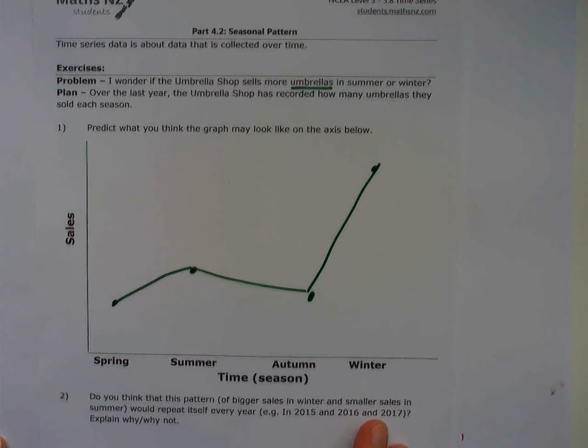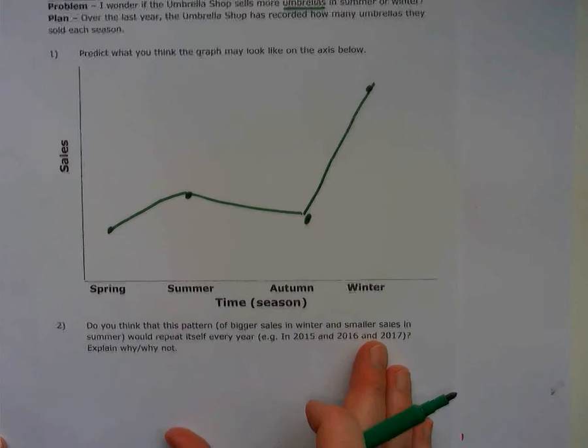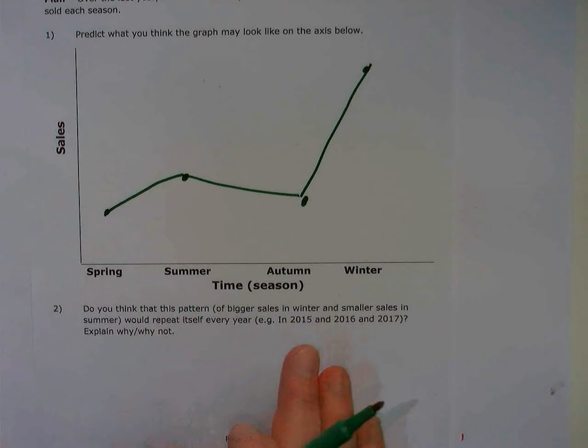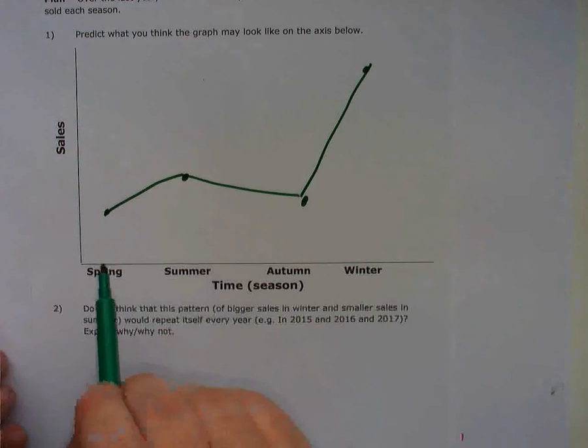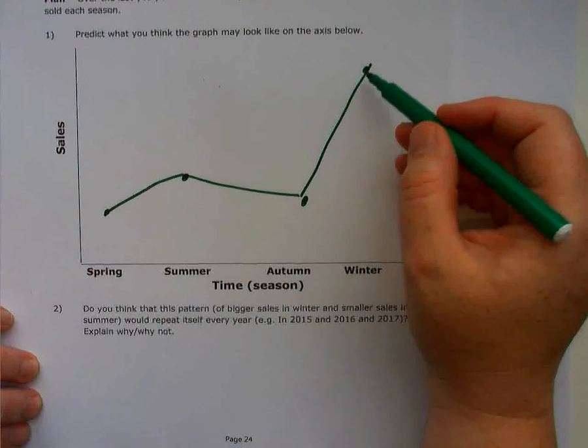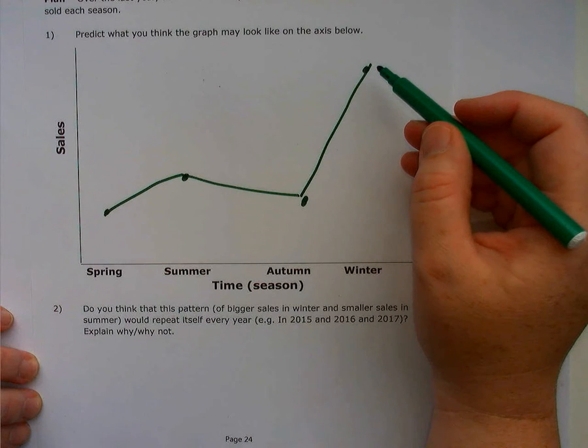So then I look at the question underneath, and it says, do you think this pattern will repeat itself every year? And as I think about that pattern, is winter going to be the wettest month of the year?